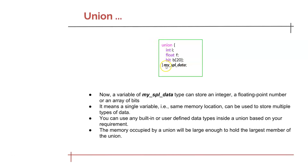Here is a union named 'MySpecialData' containing three data members: 'int i', 'float f', and 'bit b[20]', where b is an array of 20 bits. Out of i, f, and b, the floating point variable f requires the highest amount of memory — 64 bits in SystemVerilog. Therefore, when you declare a variable of this union type, it is allocated memory equal to what is required by float, and only either i, f, or b can hold a value at any time.